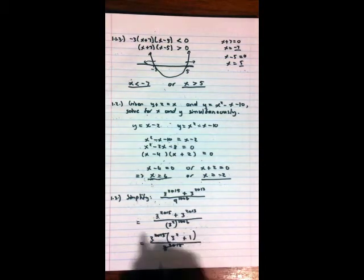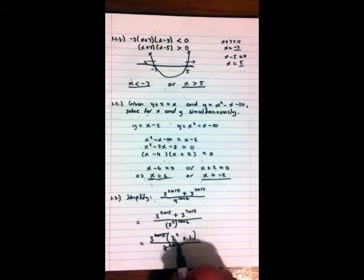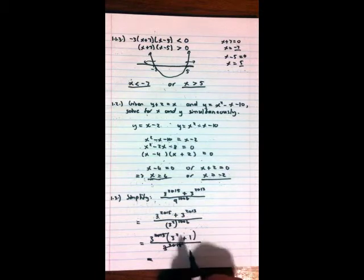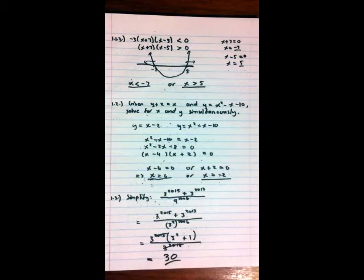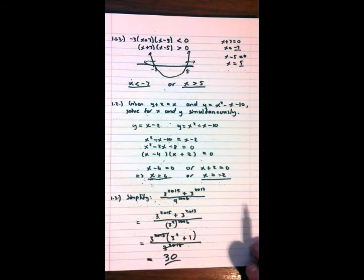Okay, now this one we can cancel over there. We're left with 3 at the top times 3² + 1. Okay, 3 squared is 9, plus 1 is 10, times 3 is 30. And there you go, that's your answer. And that is question 1 done for the November 2013 exam. We'll do question 2 in the next video. Thank you.